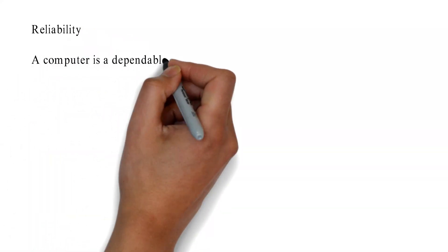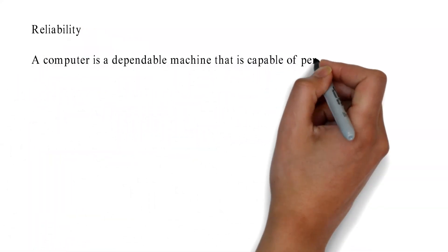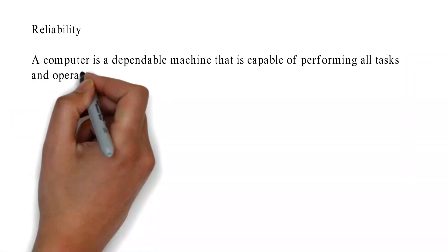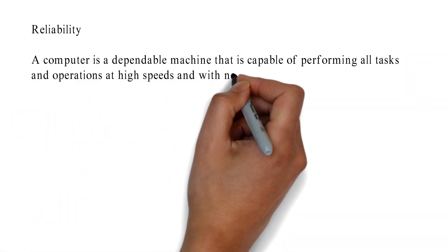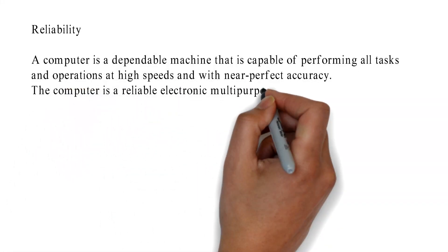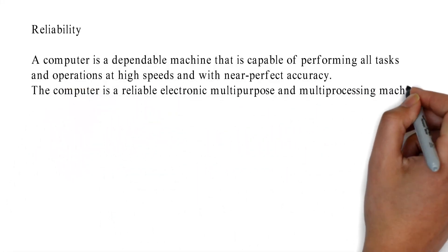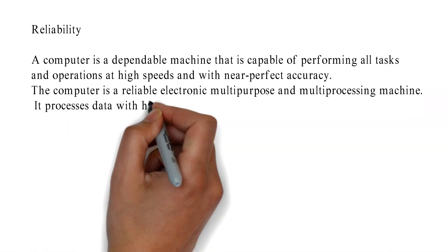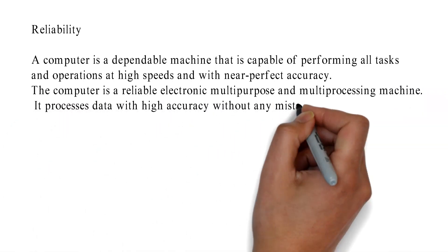Reliability: A computer is a dependable machine that is capable of performing all tasks and operations at high speeds and with near-perfect accuracy. The computer is a reliable electronic multi-purpose and multi-processing machine. It processes data with high accuracy without any mistakes.